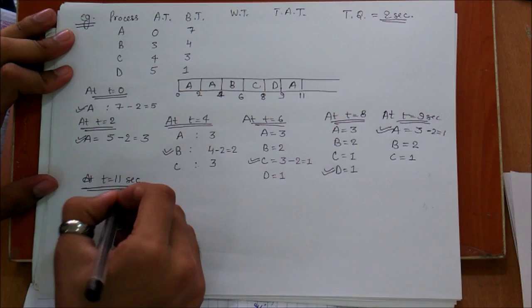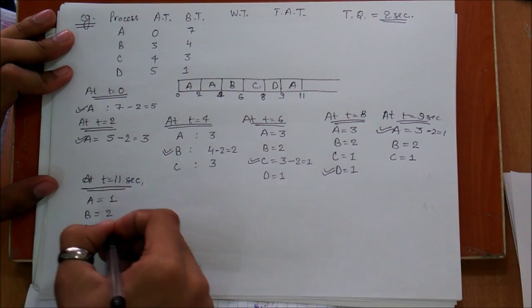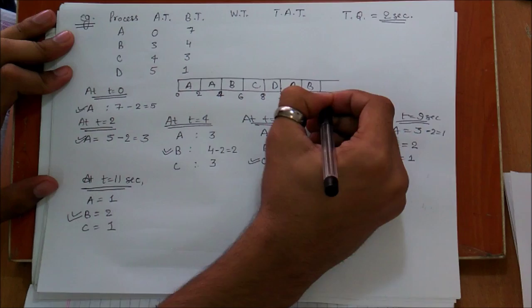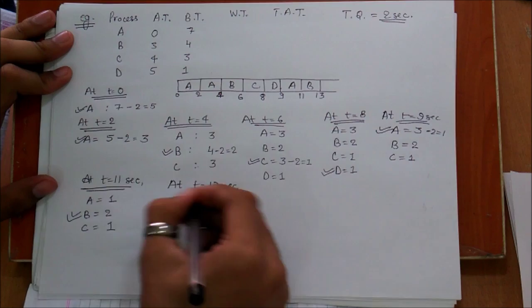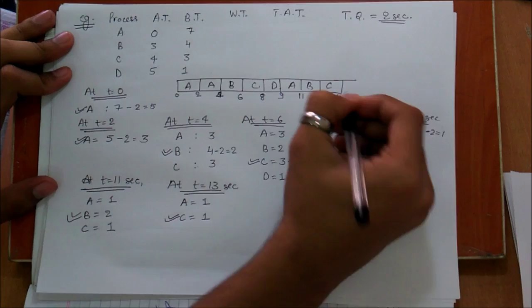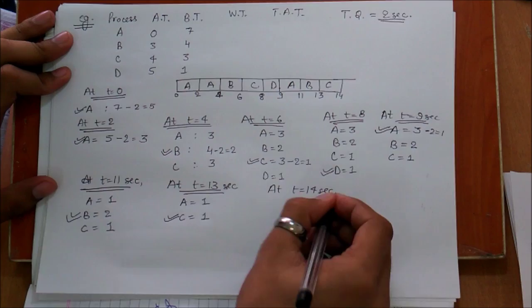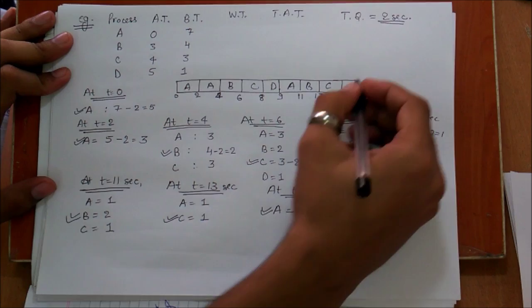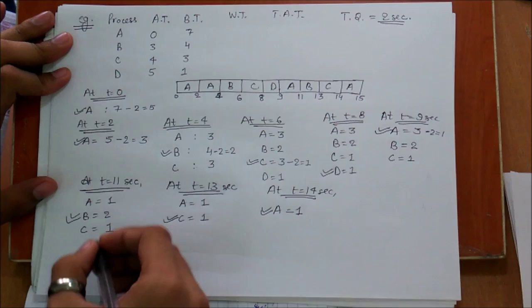Now at t=11, we have A with 1 second remaining, B with 2 seconds remaining, and C with 1 second remaining. We execute the next item B for 2 seconds, so it goes till t=13. B completes. Now at t=13, we have A=1 and C=1. We execute C for 1 second, so it goes till t=14. At t=14, we have only process A remaining, so we execute it for 1 second and it goes till t=15.